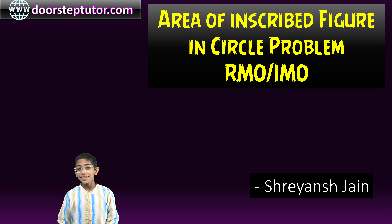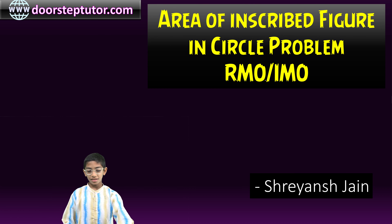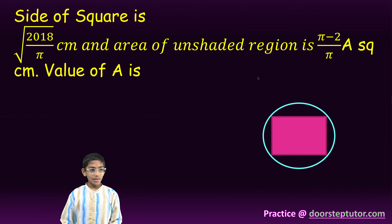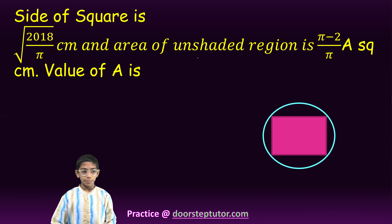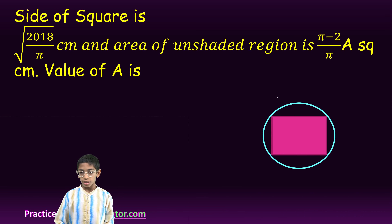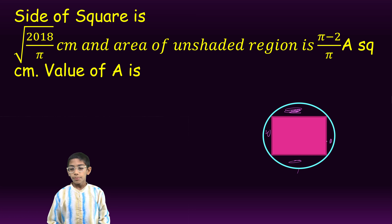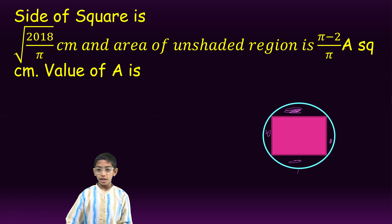Hello friends, today we will discuss an interesting problem of mathematics. So let us start. The side of a square is under root of 2018 upon pi cm, and the area of the unshaded region in this figure is pi minus 2 upon pi times a squared cm. The value of a is...